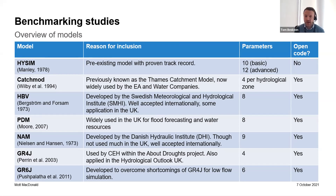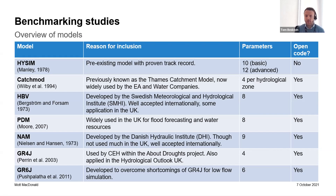CatchMod — many of you will be familiar with it as previously termed the catchment model — is widely used by the Environment Agency and various water companies. In relation to parameters, the model is broken up into hydrological zones, so there are effectively four variable parameters per hydrological zone — meaning the model could have 4, 8, 12 or more parameters depending on model complexity. We then looked at a couple of models used more widely internationally: HBV and NAM — probably slightly less usage in the UK but definitely used more widely internationally. PDM is widely used in the UK both for flood forecasting and water resources. And then lastly, GR4J and GR6J.